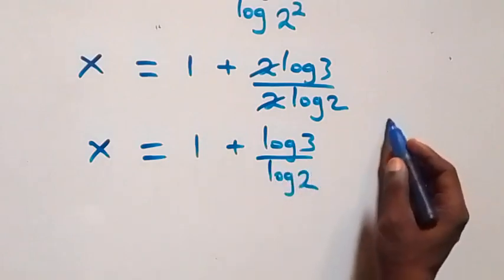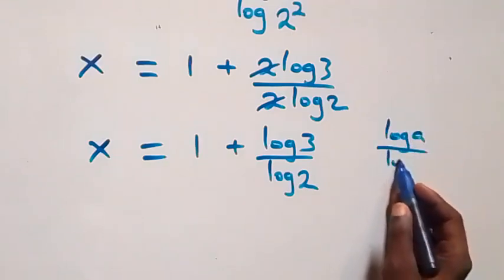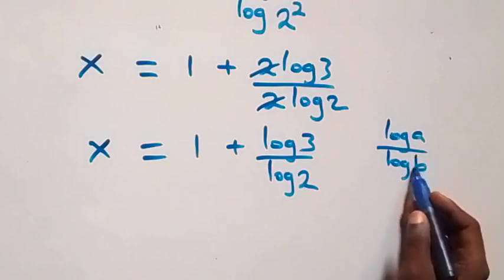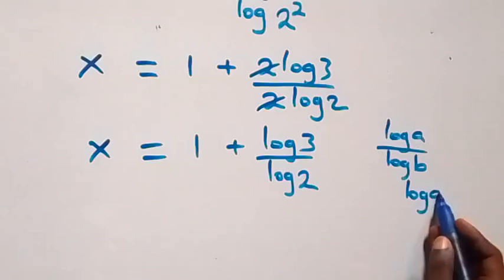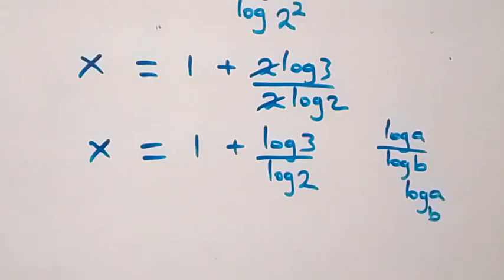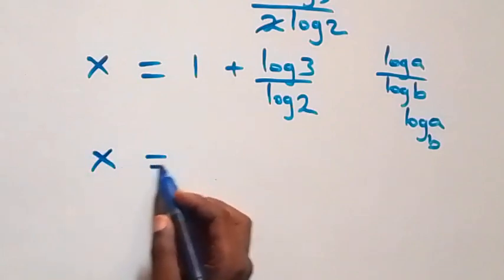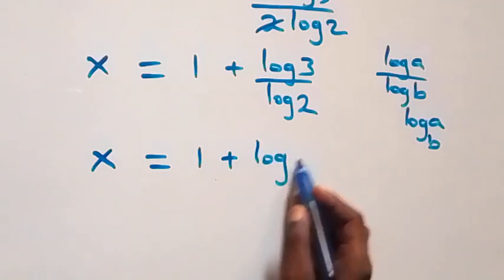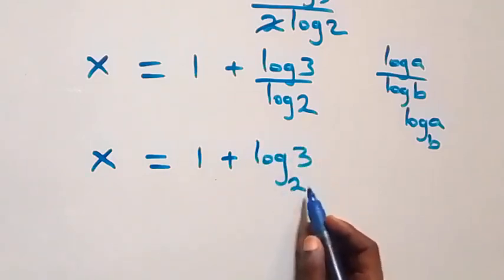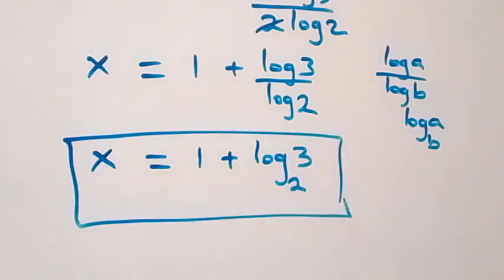Also from the change of base formula: when we have log a over log b, we can write this as log a to base b. Then what we have here becomes x equals 1 plus log 3 to base 2. So here we have the value of x as 1 plus log 3 to base 2.